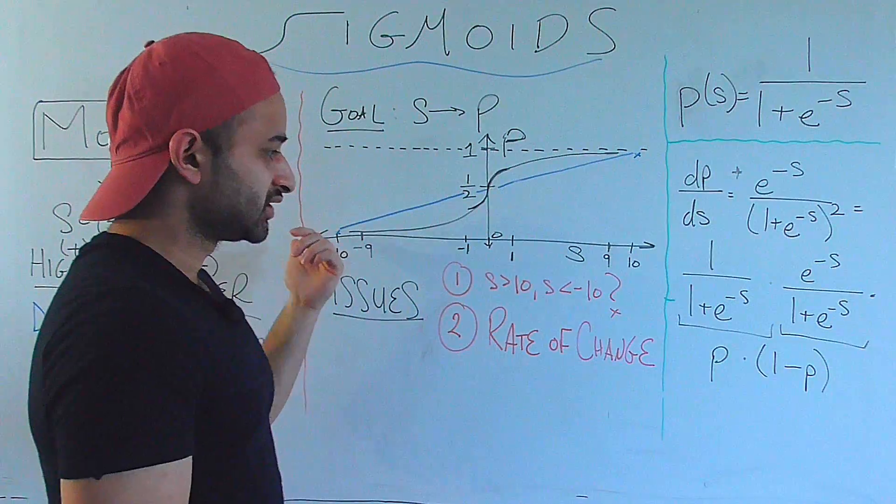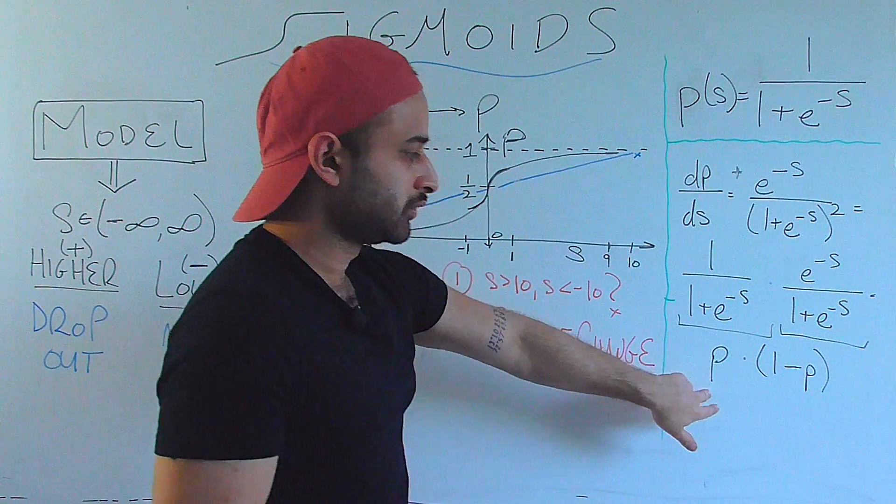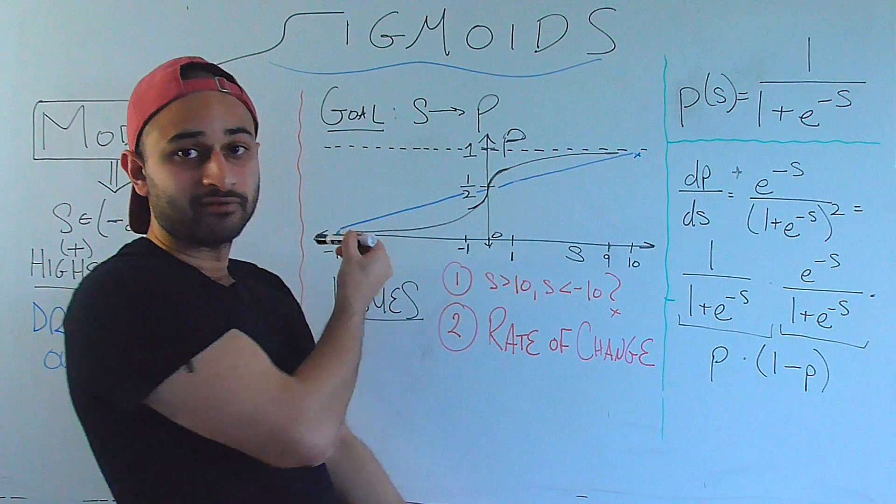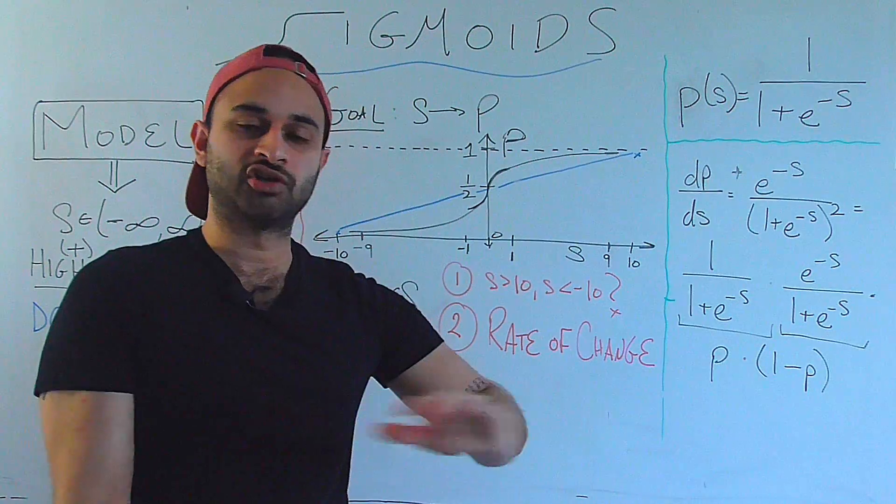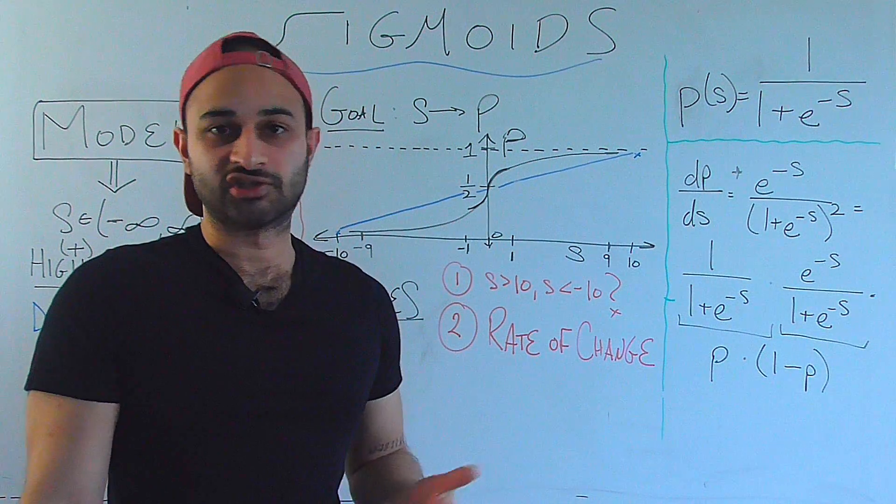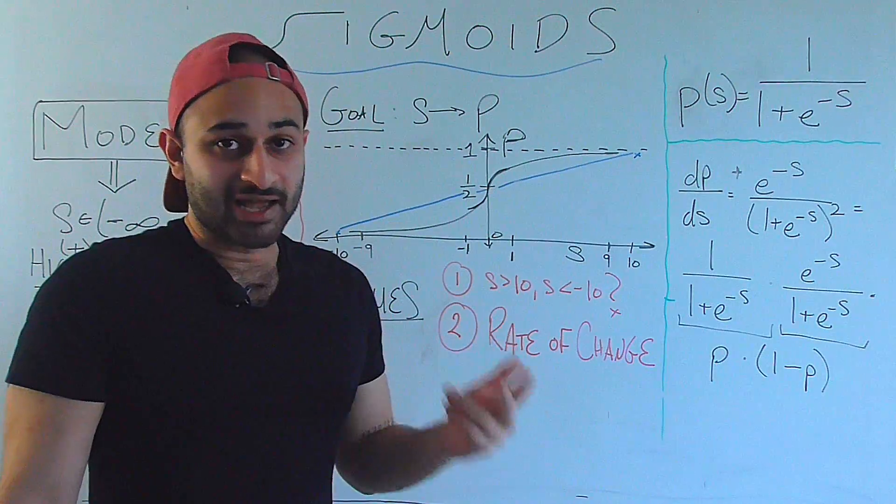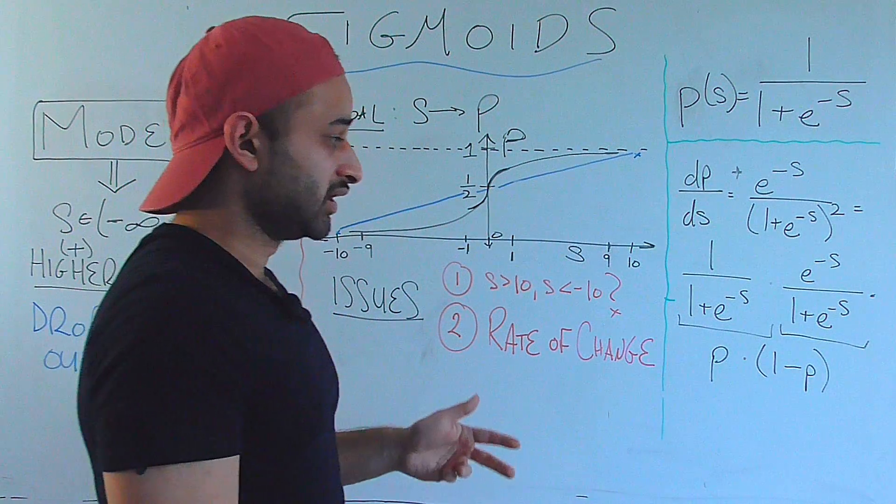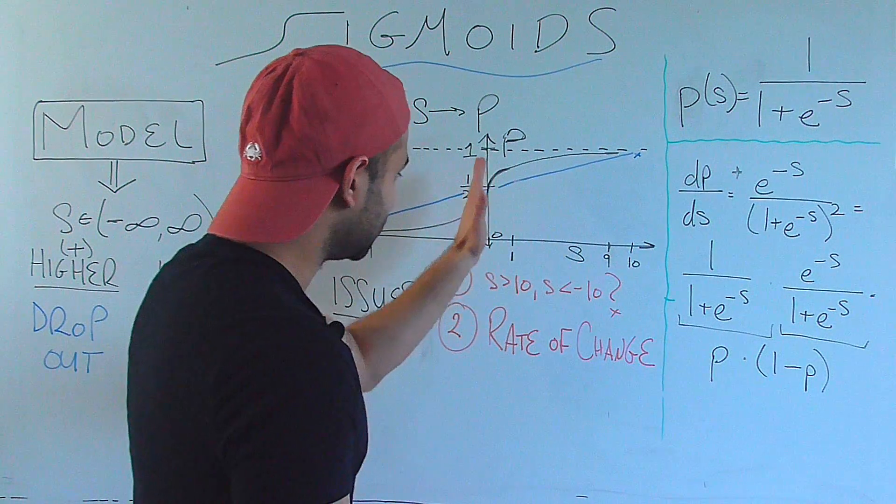Same thing for the other side. Let's say that your probability was 0, which means your score was very negative, which basically says that you're very, very sure the student's not going to drop out. If you change the score a little bit, that doesn't change the story.